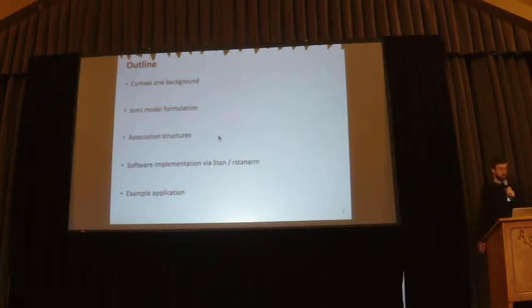So just briefly, an outline of the talk. I'll give a bit of context and background, then I'll describe the formulation of a shared parameter joint model and more explicitly describe some of the association structures. I'll then describe the software implementation I've been working on for these models and provide a few slides showing the functionality using an example application.